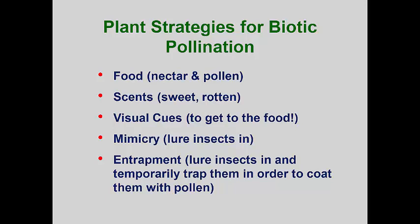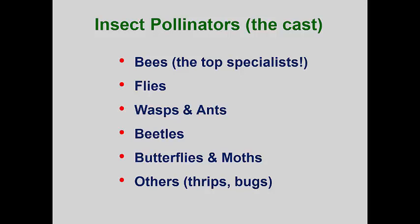The cast of insect pollinators is a long one. Bees are the top specialist pollinators, but flies can also be very important. If you have ever noticed, hawthorns have a rather rotten-smelling flower, and this attracts a lot of flies and beetles. However, linden trees have a strong and sweet smell that bees and moths can't resist.